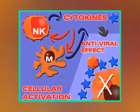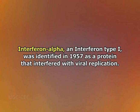Cytokines are produced by a broad range of cells including immune cells like macrophages, B lymphocytes, T lymphocytes, and mast cells, as well as endothelial cells, fibroblasts, and various stromal cells. A given cytokine may be produced by more than one type of cell.